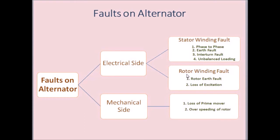On the rotor winding, there may be a possibility of a rotor-to-earth fault, meaning insulation failure between the rotor winding and the rotor core, leading to a rotor earth fault. There is also a chance of loss of excitation to the rotor, meaning the DC current fed to the rotor can be lost by any means.